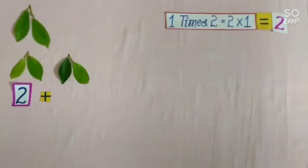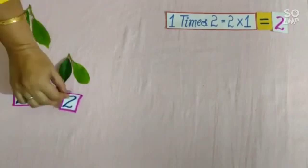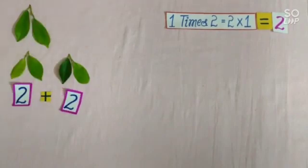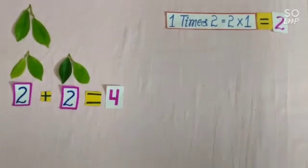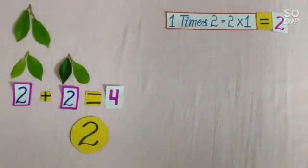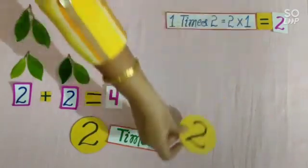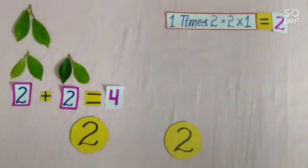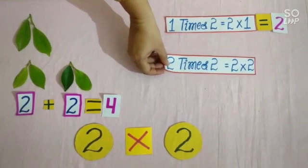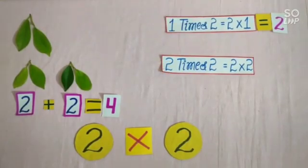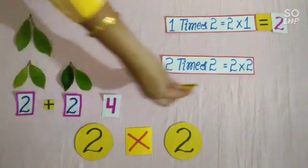Now students, we take 2 more leaves, and the number of leaves are now 4. Students, you can see the groups of leaves are 2. Now we will write here: 2 times 2. In place of times, we will put the sign of multiply. So students, we will write here: 2 times 2 is equal to 2 multiplied by 2 is equal to 4.